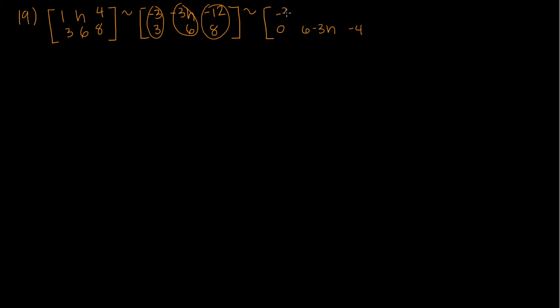Negative three, negative three h, negative twelve. Now, how can we use this information to figure out a value of h that makes the system consistent?